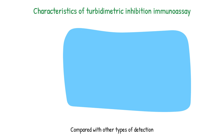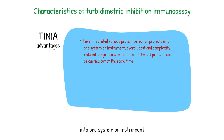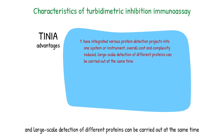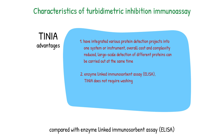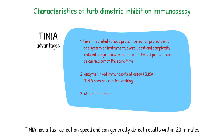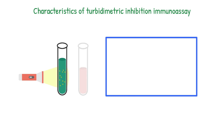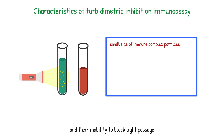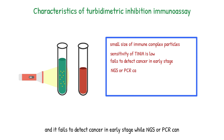Compared with other types of detection, TINIA has several advantages. First, because most companies have integrated various protein detection projects into one system or instrument, the overall cost and complexity have been greatly reduced, and large-scale detection of different proteins can be carried out simultaneously. Second, compared with enzyme-linked immunoassay (ELISA), TINIA does not require washing, which simplifies the process and reduces the risk of contamination. In addition, TINIA has a fast detection speed and can generally detect results within 20 minutes. However, due to the small size of immune complex particles and their inability to block light passage, the sensitivity of TINIA is low, and it fails to detect cancer in early stages, while NGS or PCR can.